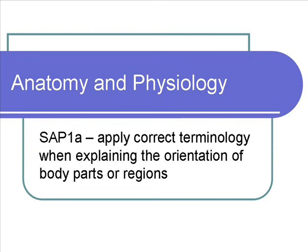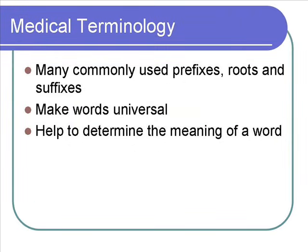This lecture is going to cover different medical prefixes, roots, and suffixes. These are very important and you'll see them throughout the semester. Really make sure you commit them to memory because it's going to help you out a lot along the way. There are many common prefixes, roots, and suffixes, and they're very helpful because they make a lot of terms universal. For instance, if I say osteocyte, 'osteo' is the root for bone and 'cyte' means cell, so if you can break that word apart, you understand it's a bone cell.